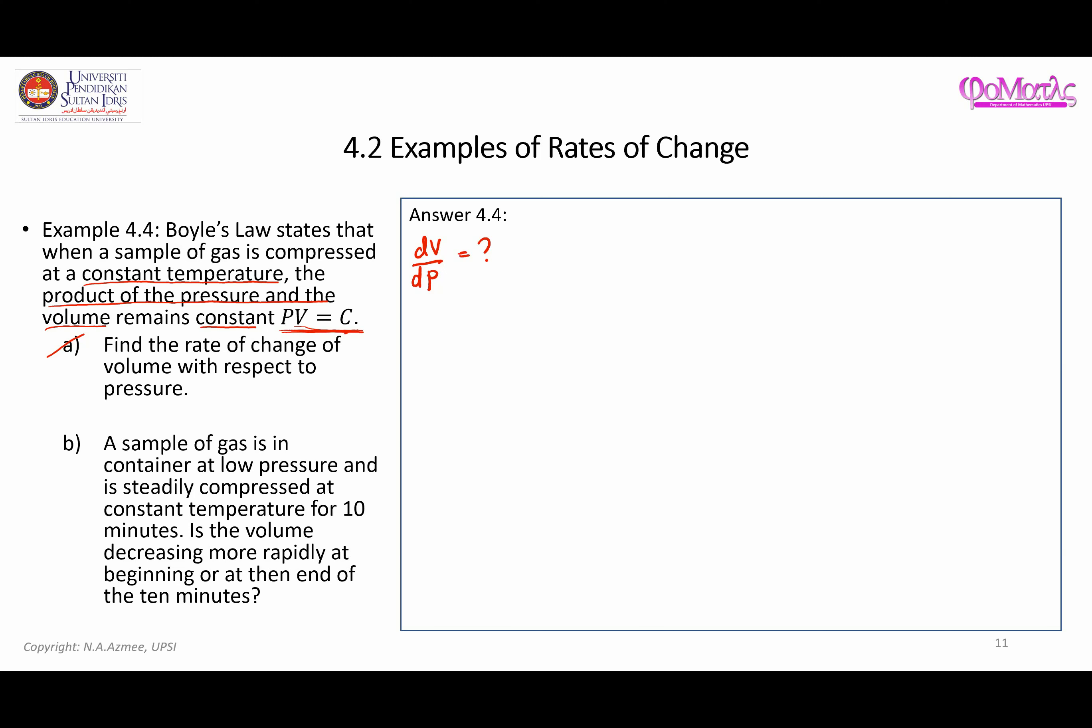So before you can actually get on with differentiating, let's rearrange this equation here so that volume becomes the subject. So PV = C, therefore V = C/P. And that can be actually written as C times pressure to the negative one.